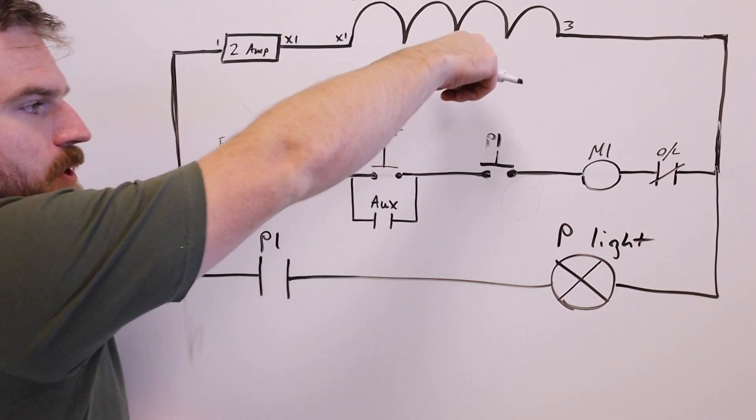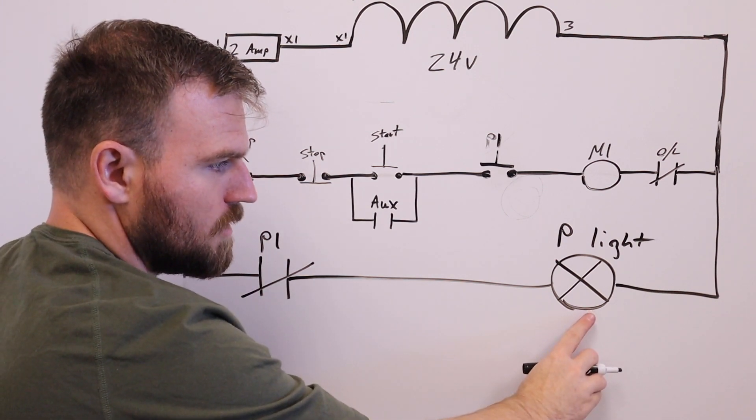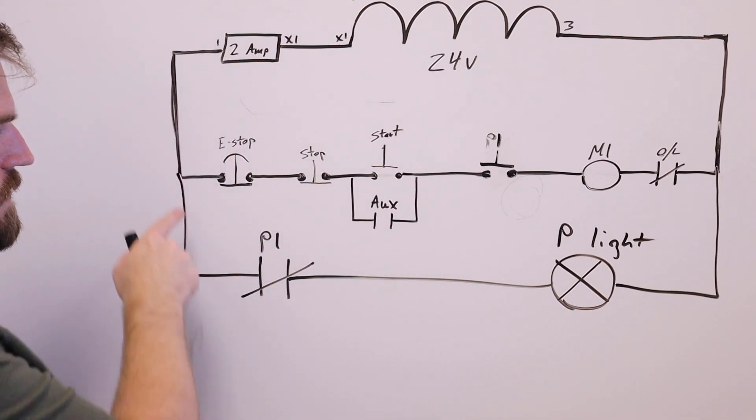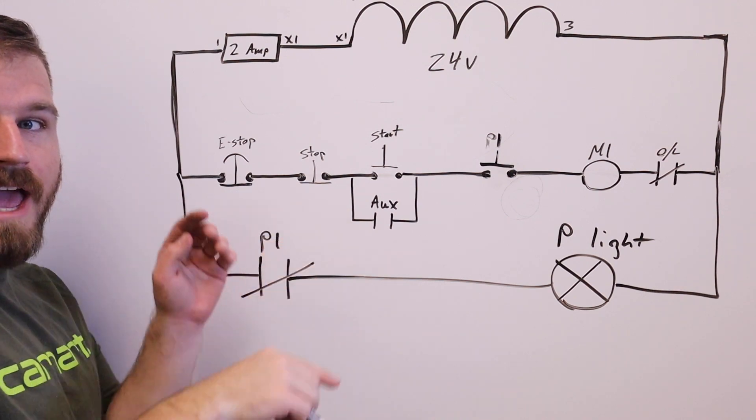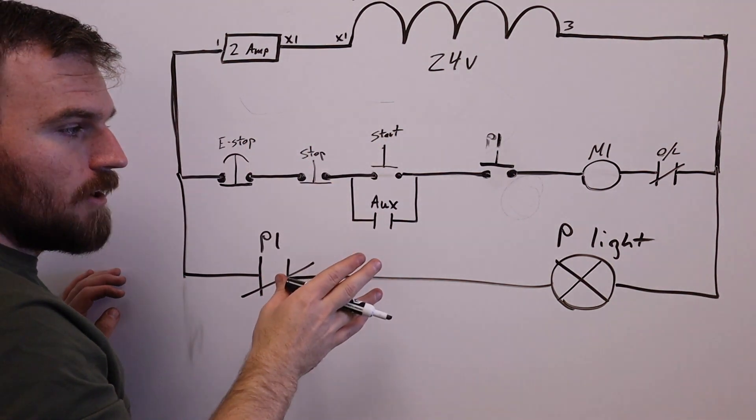Alright. So what happens, we press this button, this one closes, this light turns on. Notice that this has its own power going here. So if we press the button, but we haven't started the circuit, the permission light will come on.